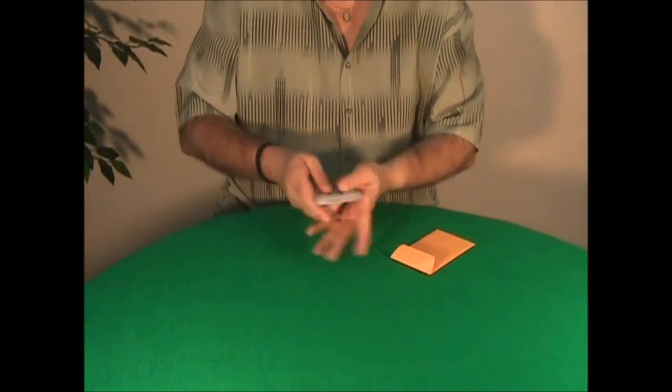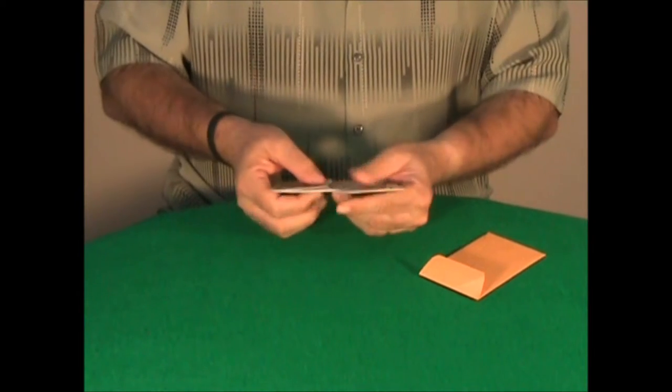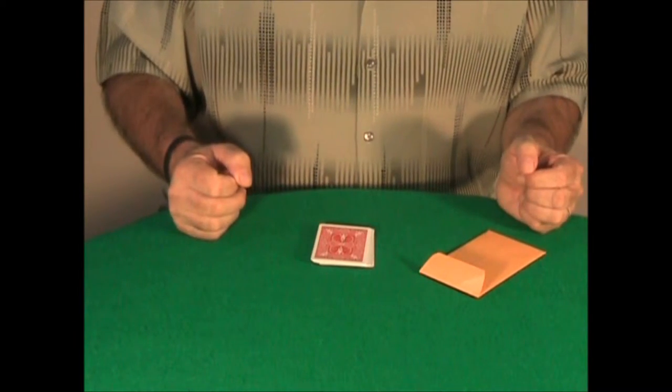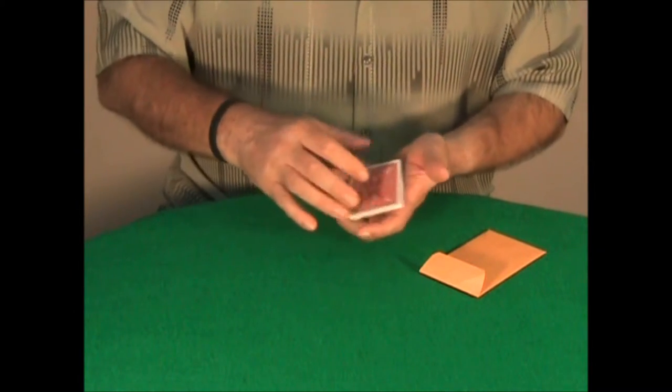You start by showing the deck of cards. You can shuffle it as I told you. I will not explain every time the Charlier shuffle. It will be explained at the beginning of the DVD. So when I say shuffle the cards, use the Charlier shuffle.